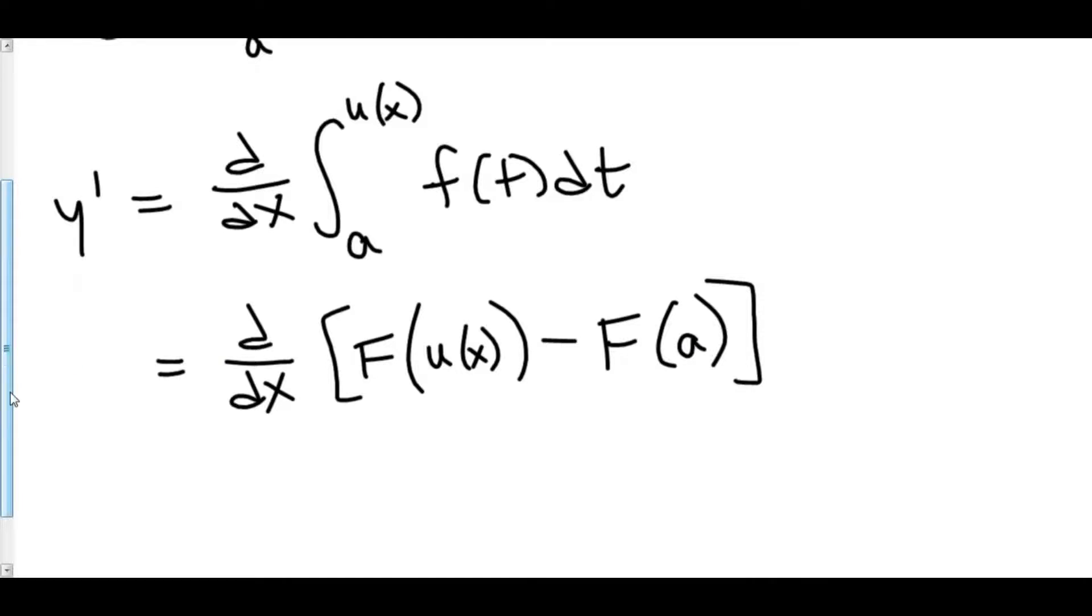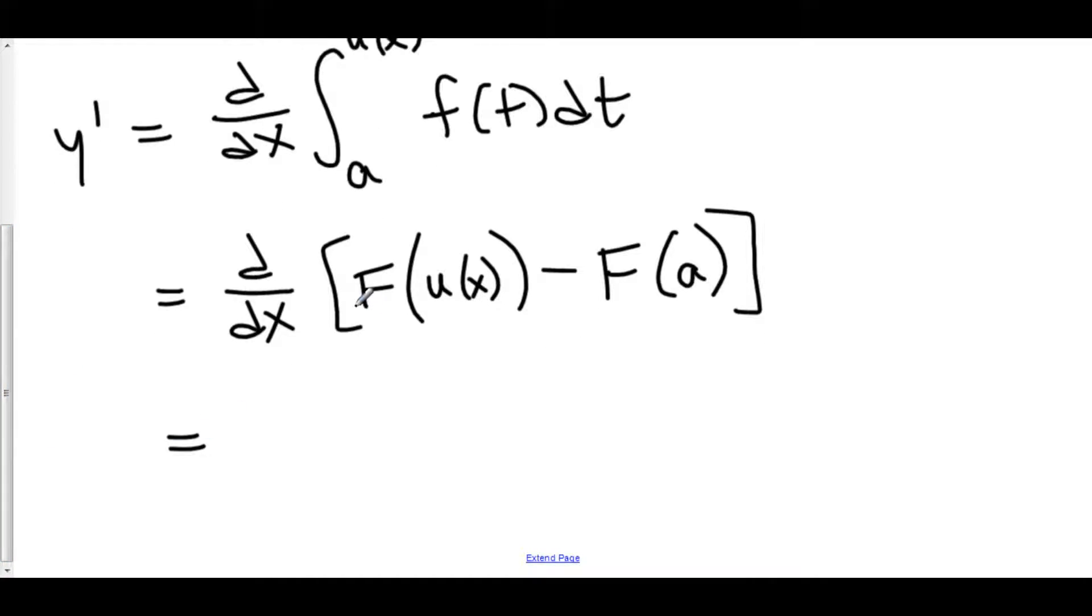At this point, we notice we need to use chain rule because we have F of stuff, some function of x. When we take the derivative of F of stuff, we take the derivative of the outside function F, which is little f, and we plug in the stuff.